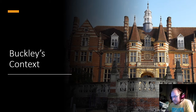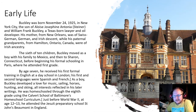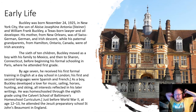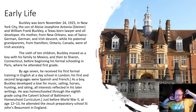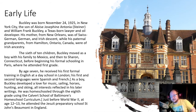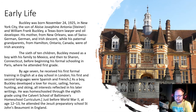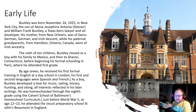Moving on to William F. Buckley and his context — it's going to be a little different. Buckley was born on November 24th, 1925, in New York City, the son of a Texas-born lawyer and oil developer. His mother from New Orleans was of Swiss, German, and Irish descent, while his paternal grandparents from Hamilton, Ontario were also of Irish ancestry — so he's mostly an Irish kid. The sixth of ten children, Buckley moved with his family to Mexico and then to Sharon, Connecticut before beginning formal schooling in Paris, where he attended first grade. By age seven he received his formal training in English at a day school in London. His first and second languages were Spanish and French. As a boy, Buckley developed a love for music, sailing, horses, hunting, and skiing — all interests reflected in his later writings.